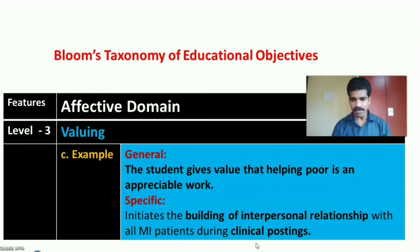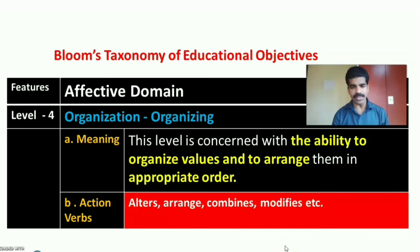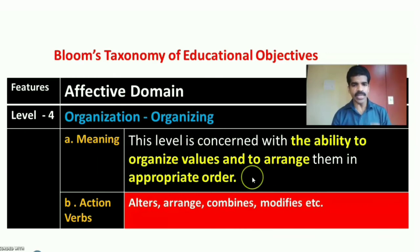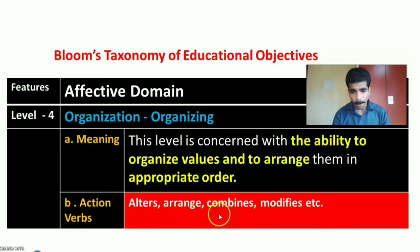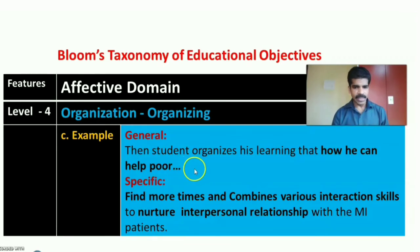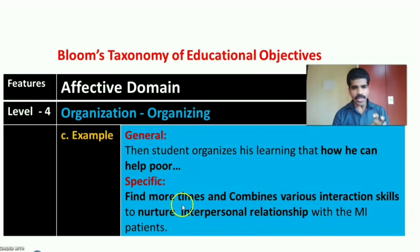The fourth level in the affective domain is organization or organizing. This level is concerned with the ability to organize values and arrange them in an appropriate order. The student finds time to do more activities in relation to their area of interest. Action verbs include: alters, arranges, combines, modifies. In the general example, the student organizes their learning to find various ways to help the poor. Specifically, the student finds more time and combines various interaction skills to nurture interpersonal relationships with MI patients in the ward.